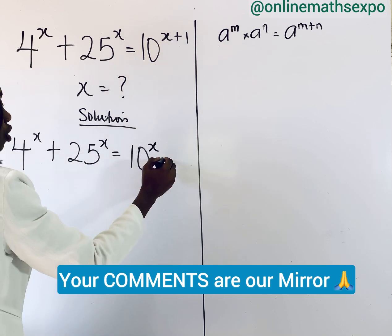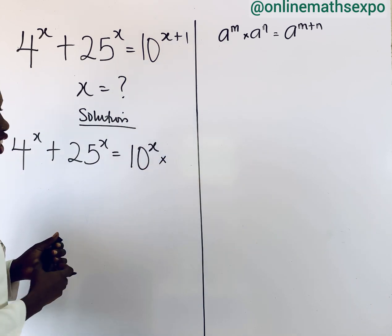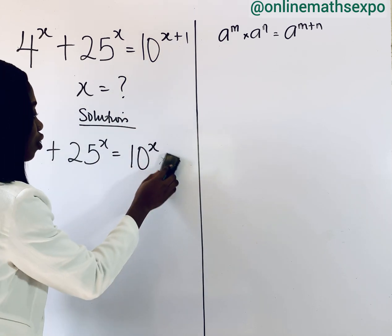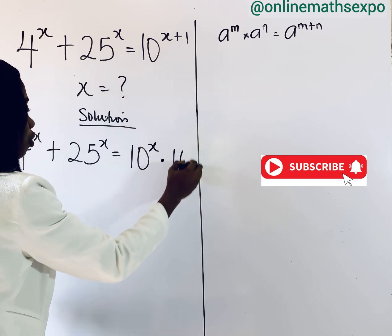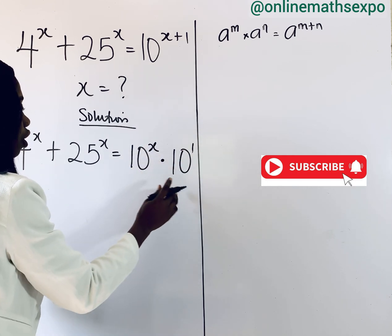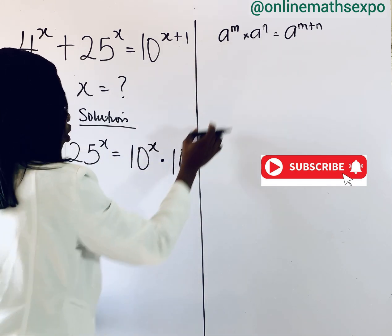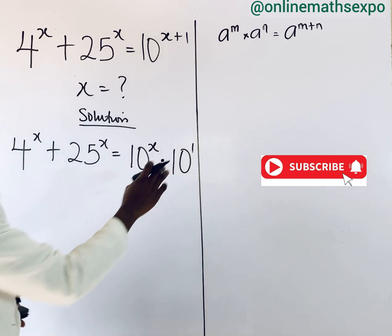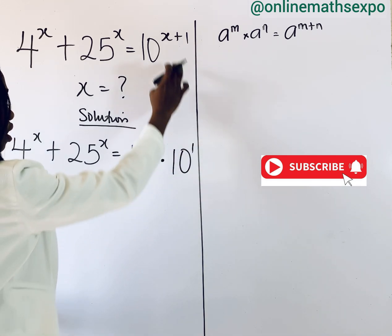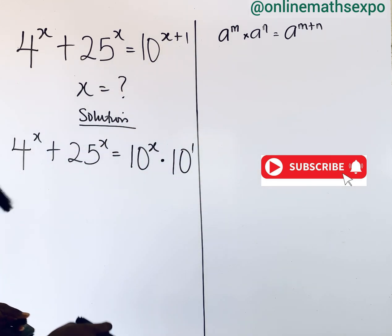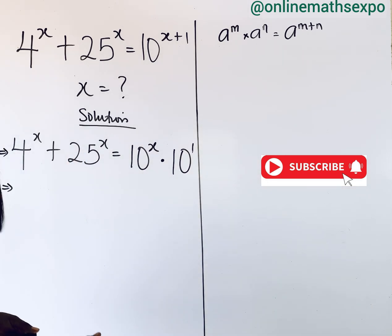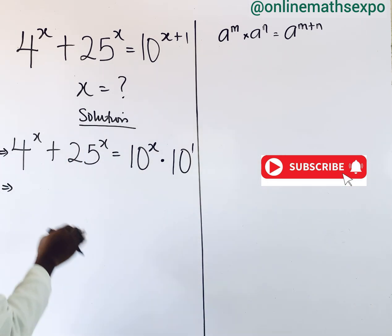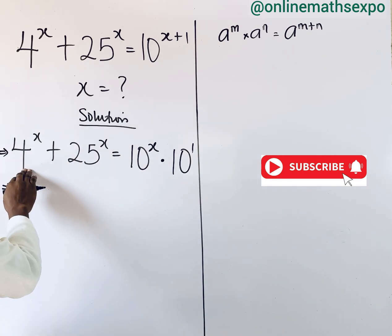Then this addition will now turn to multiplication, so we are going to use dots to represent it. We now have 10 raised to the power of 1. If you apply this rule, you are going to add the powers, and when you add them it gives you this. Now, at this point, you can choose to divide.